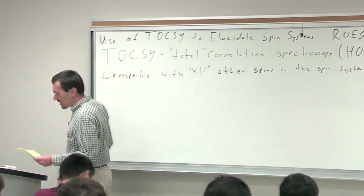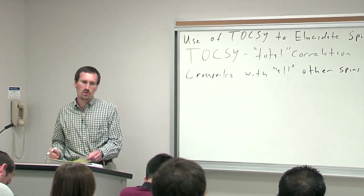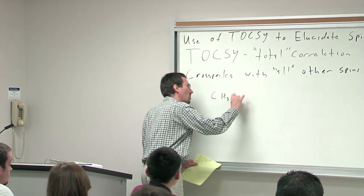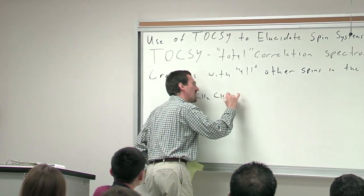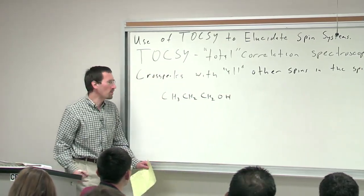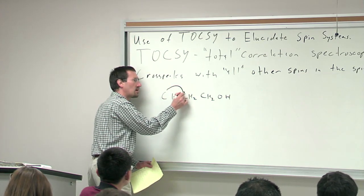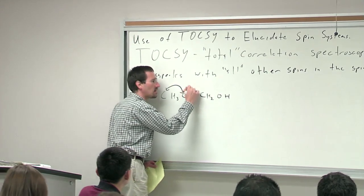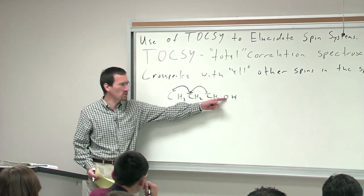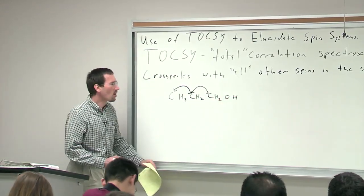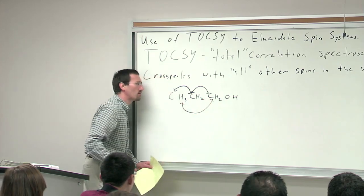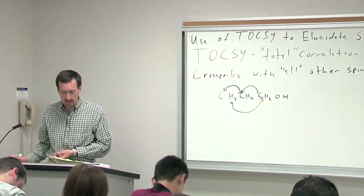This technique is like a super COSY. For example, if we have propanol — the molecule I used in the intro to 2D spectra — COSY will link your methyl group to your central methylene and the central methylene to the next methylene. What TOCSY will do, since all of these groups are in the same spin system, is also link the methyl group to the terminal methylene.